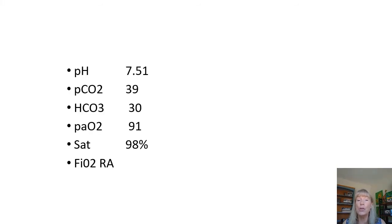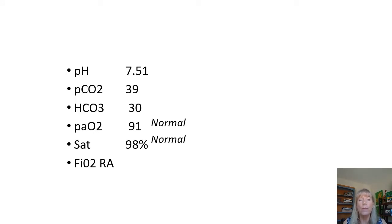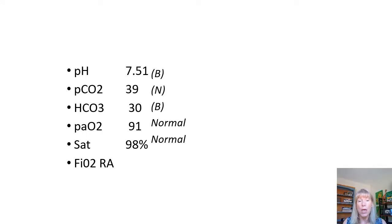Number two: oxygenation is normal and the patient is on room air, so no problems with oxygenation. The CO2 is normal. But the bicarb is in the base range. The pH is also base. So the bases line up and we have a metabolic alkalosis.